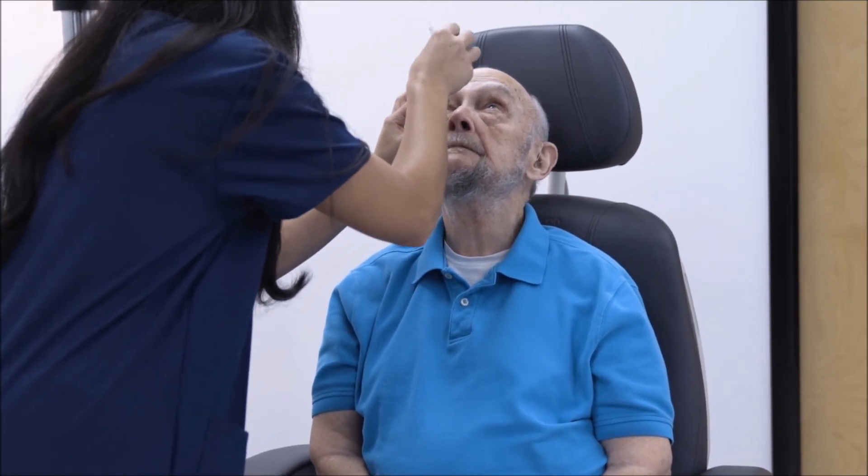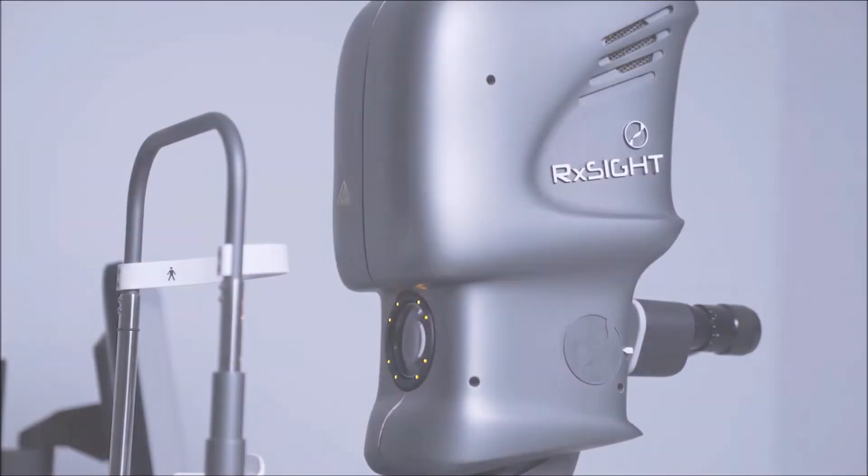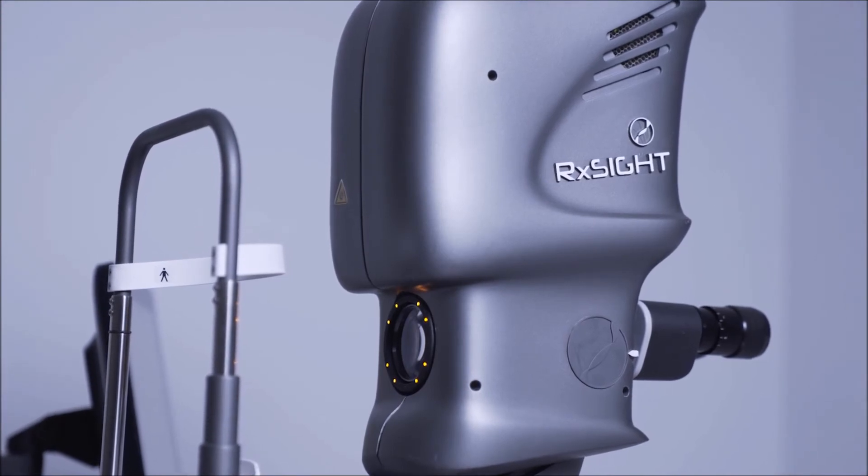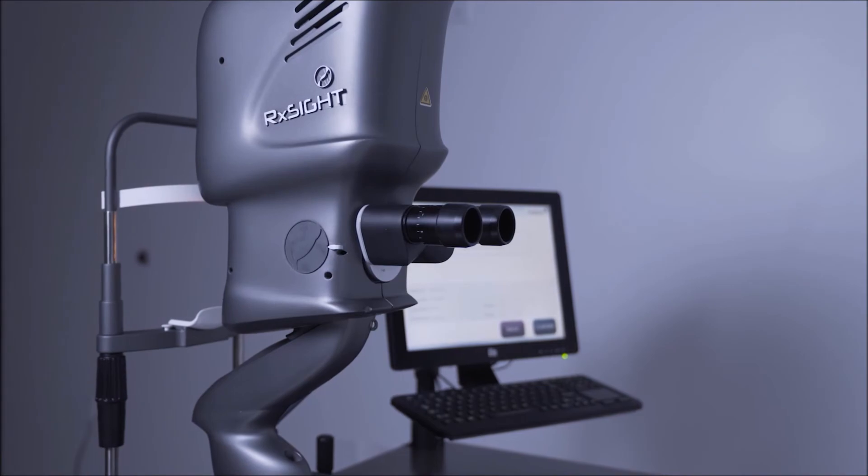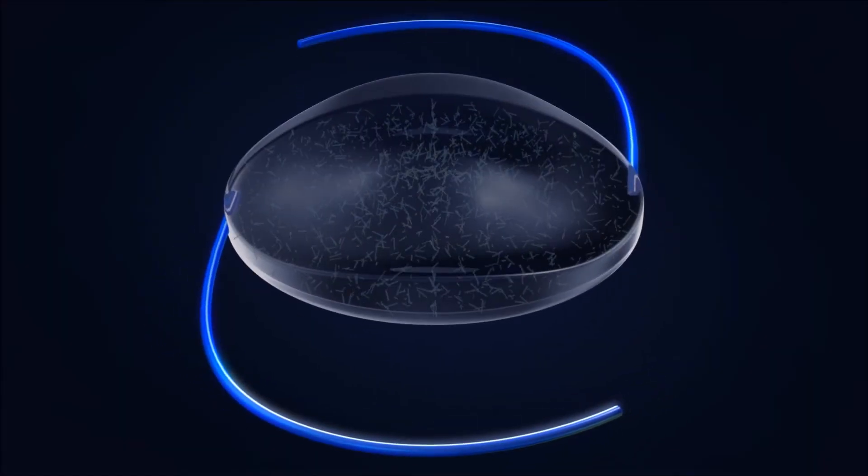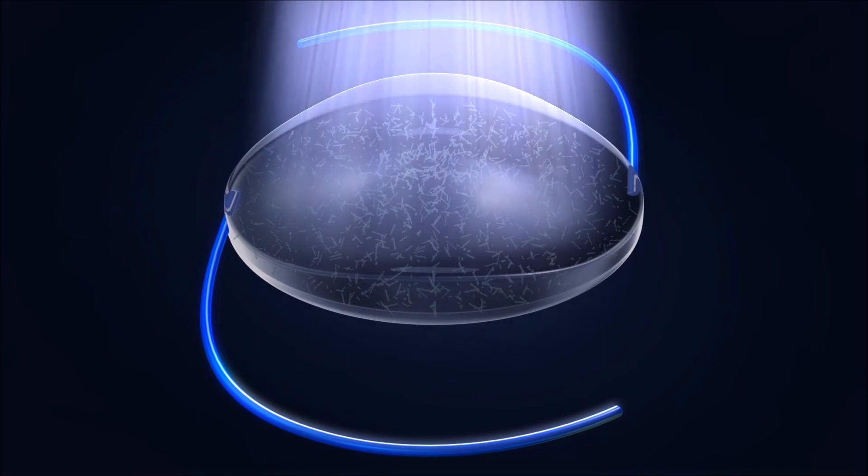Up to 3 adjustments can be performed. The necessity of additional light adjustment treatments is guided by the LDD and based on achievement of desired outcome. Once the best possible vision has been achieved, the patient returns, and UV light is applied to the entire lens to prevent any further changes.